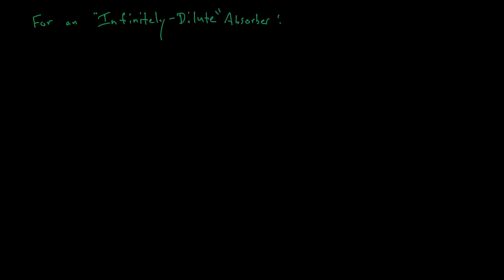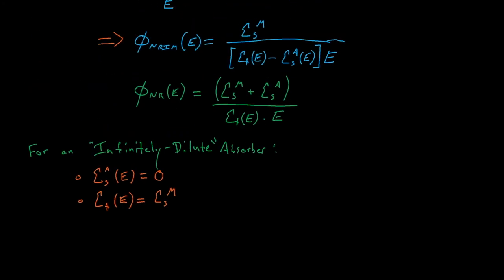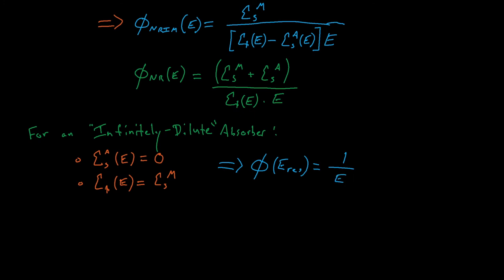We'll finish today's discussion by mentioning a secret third option: the infinitely dilute absorber assumption for an ideal slowing down world. This approximation assumes neutrons slowing down in the presence of a moderator and an infinitely dilute absorber. Because the absorber is infinitely dilute, the absorption cross-section is zero and the total cross-section is just the moderator scattering cross-section. With these assumptions, both the narrow resonance and the narrow resonance infinite mass approximations reduce to show that the slowing down flux is just 1/E — a nice sanity check confirming both approximations reduce to the usual 1/E result when there is no absorber and no resonances present.